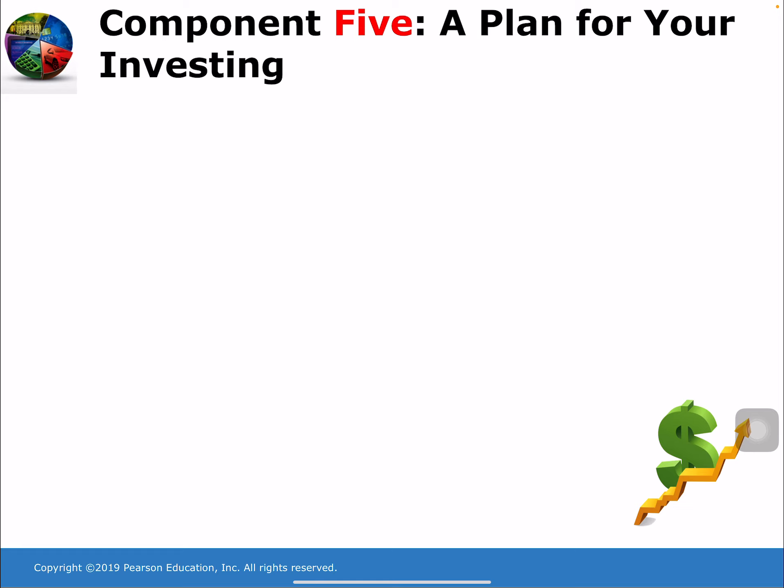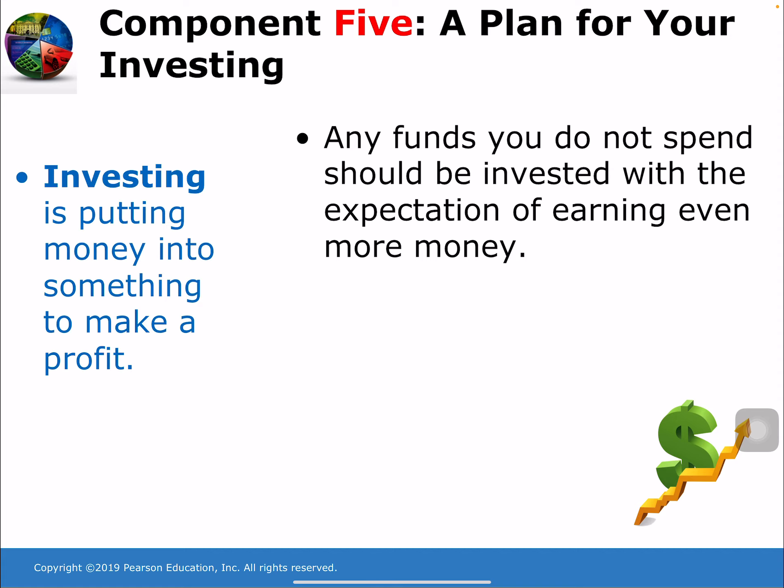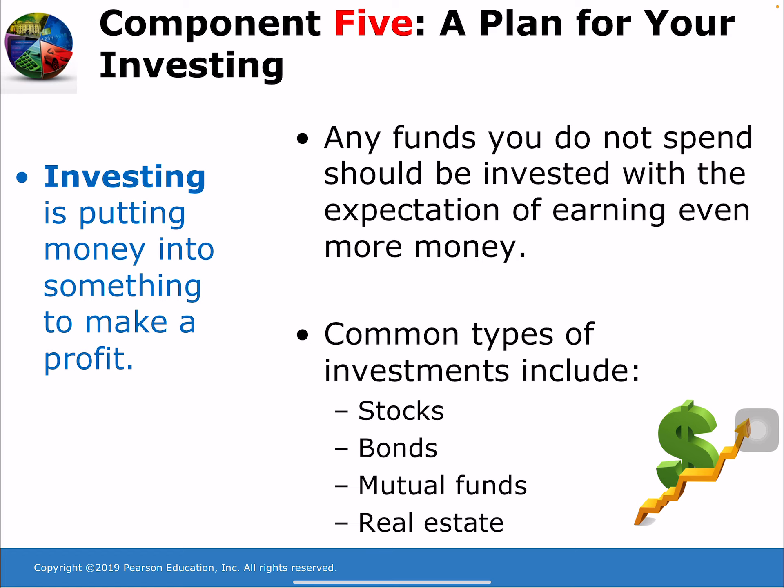Component 5 is a plan for investing. You need to accumulate some liquid funds to meet day-to-day expenses and pay for unexpected events, but any funds you do not spend should be invested with the expectation of earning more money. Some people invest by placing money in a savings account. Common types of investments include stocks, bonds, mutual funds, and real estate. When you put money into those types of investments, you can get your cash out, but it's not quite as liquid — it may take several weeks to a month.